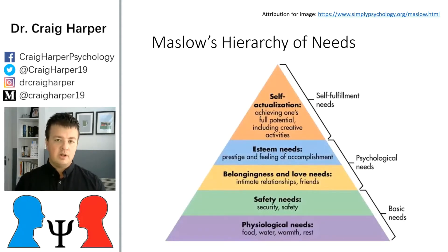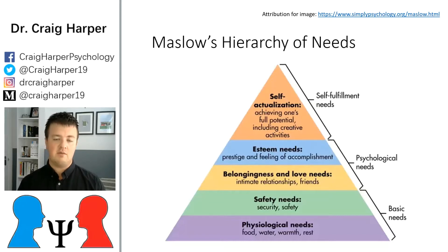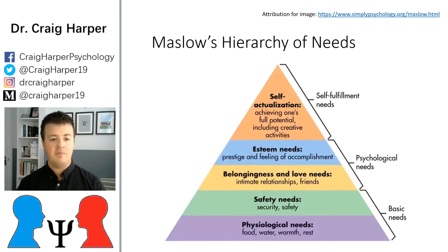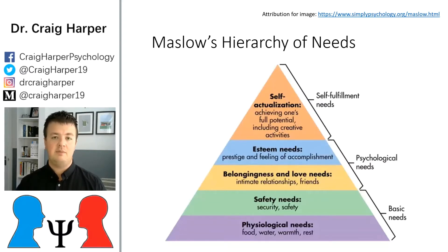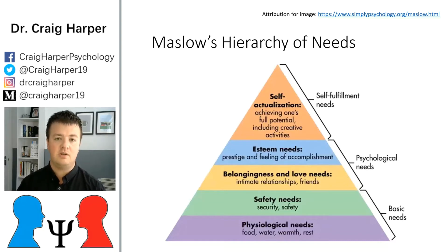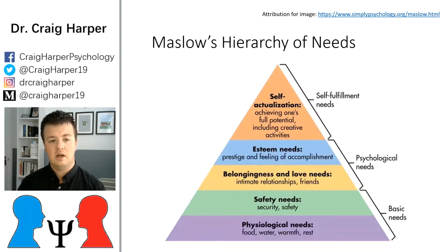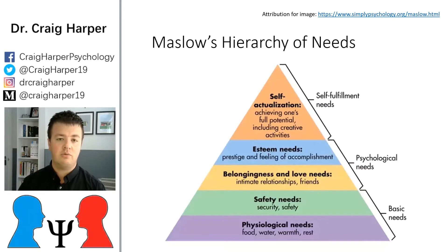The most well-known humanistic psychologist is Abraham Maslow. Most people have heard of Maslow's hierarchy of needs — a pyramid where basic needs like food, water, and warmth sit at the bottom, followed by safety needs, then love and belonging, which gives you self-esteem, and then self-esteem provides a springboard for reaching your fullest potential: the achievement of self-actualization.